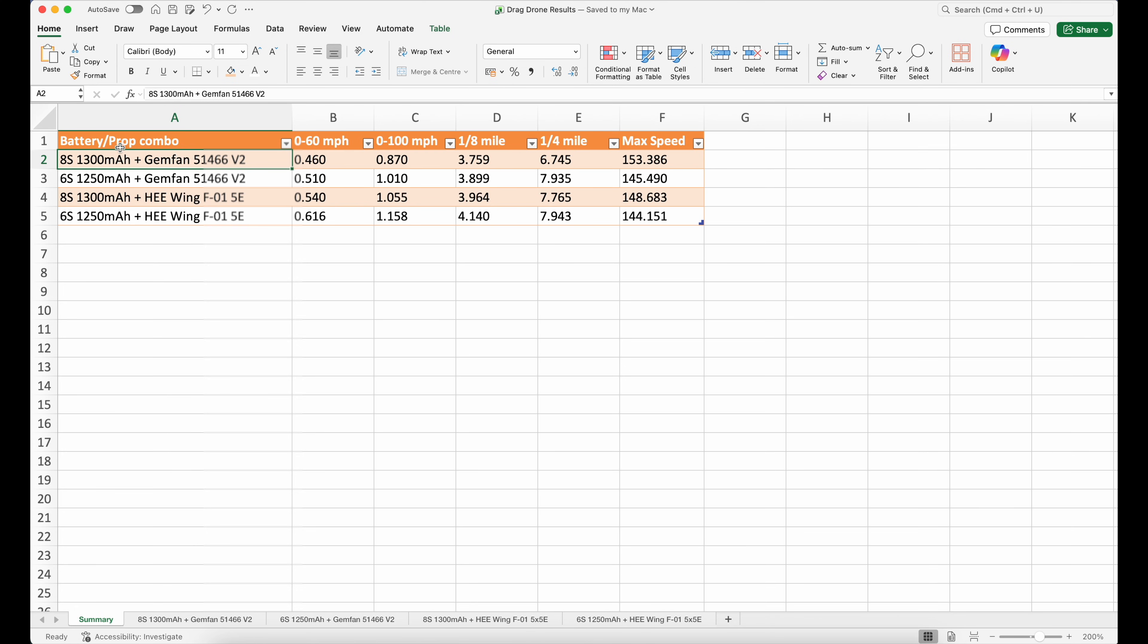So the best results were in fact the 8S 1300 mAh with the Gemfan tri-blades. 0 to 60: 0.46, 0 to 100: 0.87, standing eighth of a mile 3.75 and the standing quarter mile was 6.745 seconds with a maximum speed of 143 terminal. And you can see these get slightly slower and slower. We'll put them in order of best at the top and worst at the bottom. So this is a little bit slower as you can see.